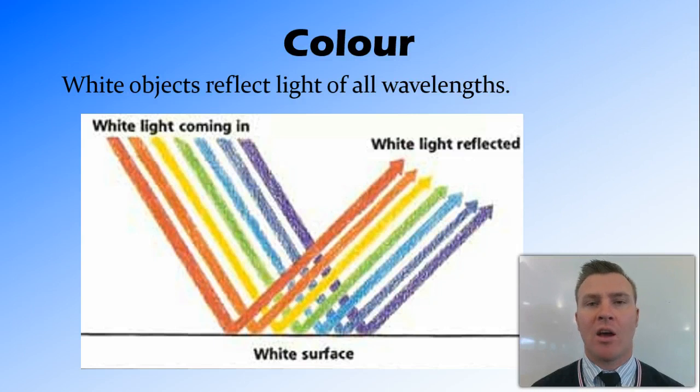So if we have white light reflecting off an object that we perceive as white, what's happening is the wavelengths of all the different colours are reflecting off that object so we get all the different wavelengths come out the other side and we perceive that as being white.